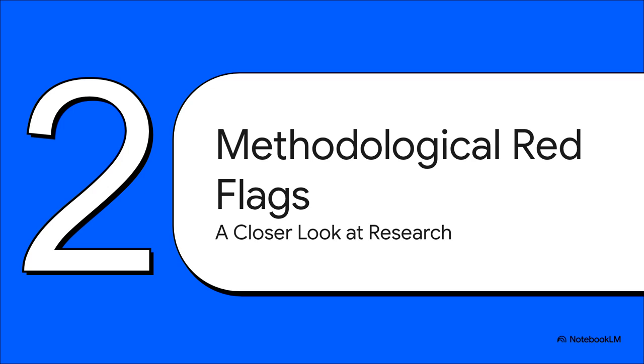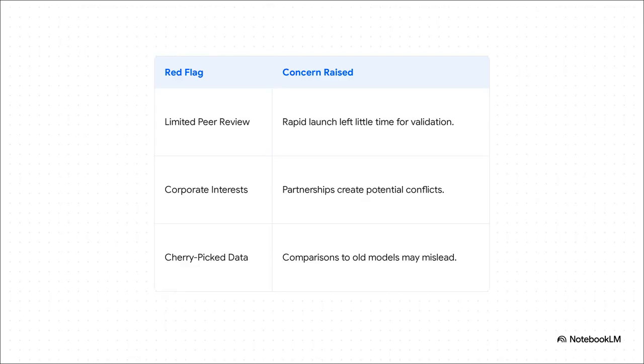So beyond just the scientific claims themselves, the way the research was actually rolled out raised some pretty serious red flags for a lot of people in the community. And this table really lays it all out. You've got this lightning-fast launch, going from a paper to huge press announcements almost overnight, which leaves very little time for proper peer review. Then you see that the company has major partnerships with NVIDIA and AWS, which could create some conflicts of interest. And the decision to only compare BDH to much older models, it starts to look a lot like they were cherry-picking the data to make the results look as good as possible.